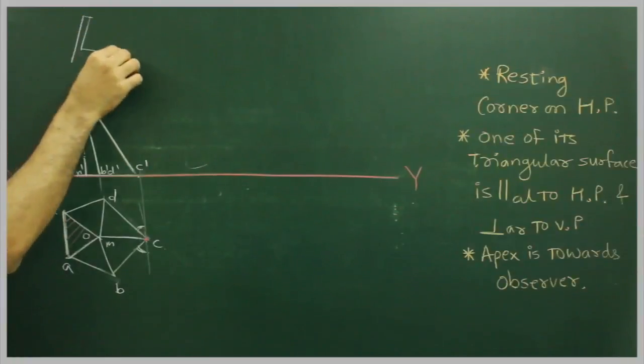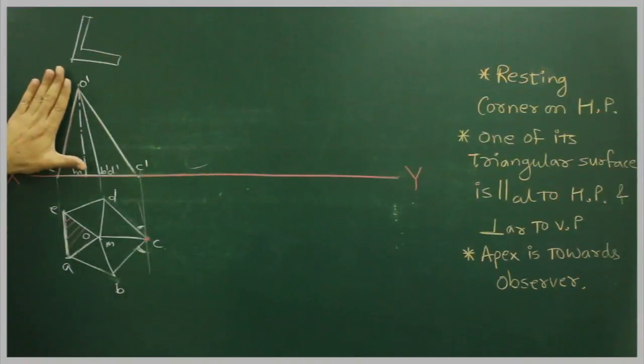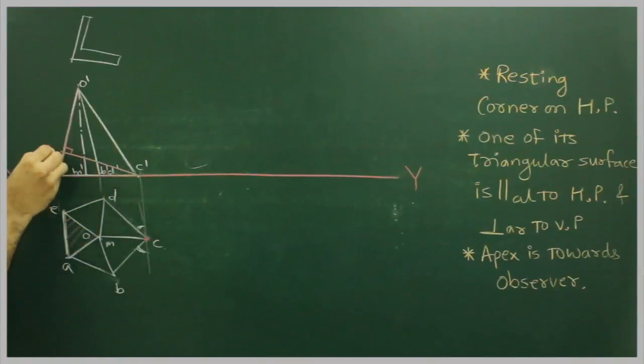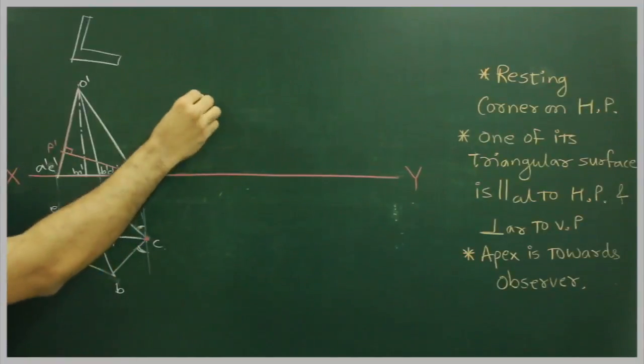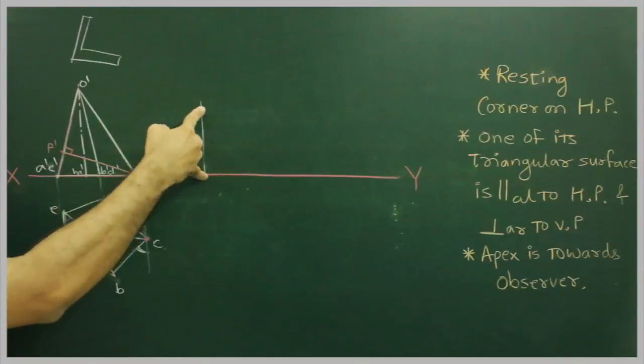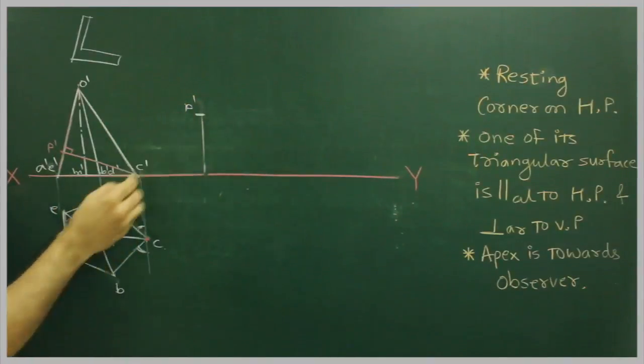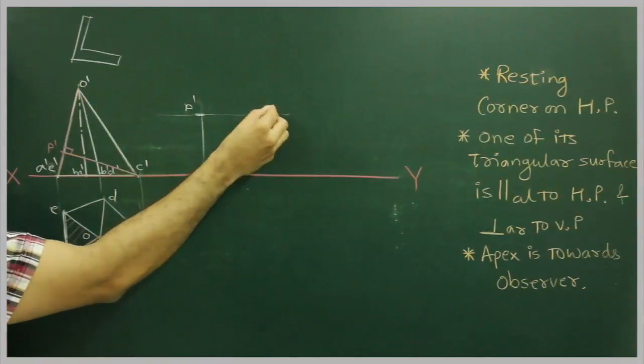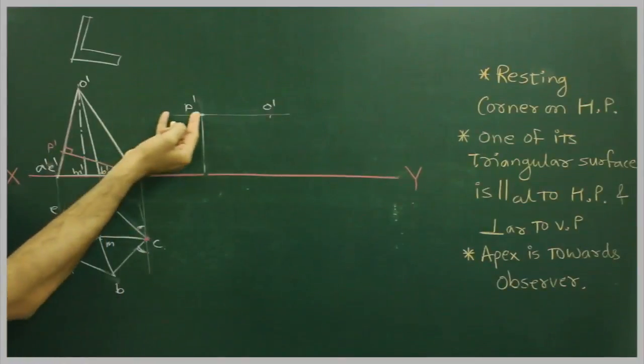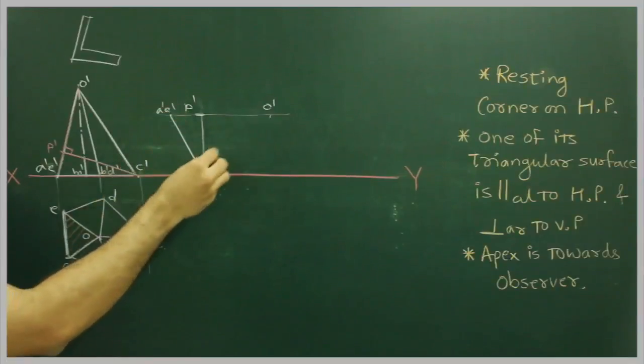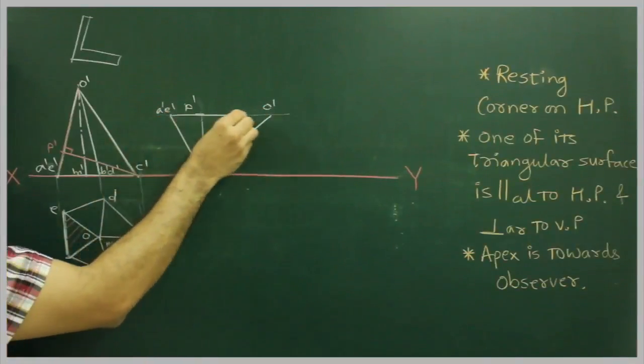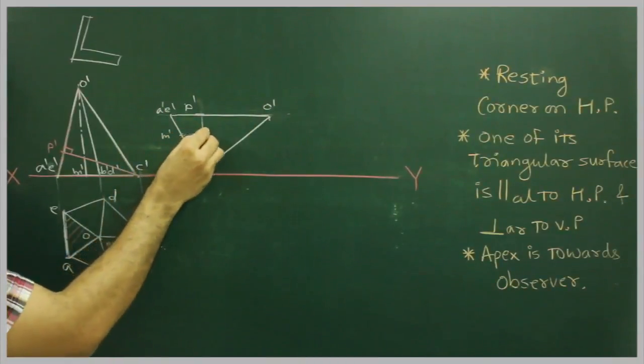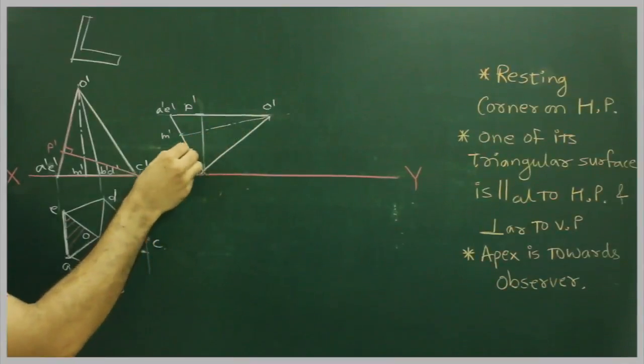So what we will do, with our drafter we can draw a perpendicular line from C, that is P'. Then we draw a vertical line, take C' to P', cut on this, the draw comes onto line. Take P' to O', take P' to E', E'. D', this is M', and this is B'.